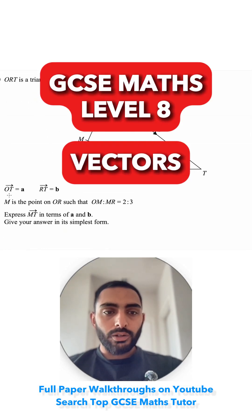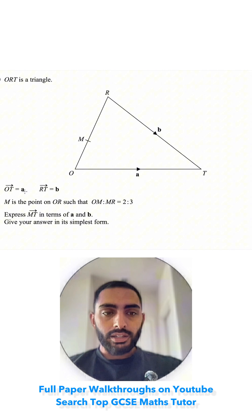Question 20. ORT is a triangle. OT equals A and RT equals B.